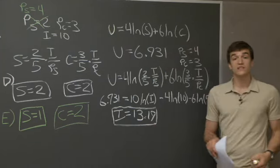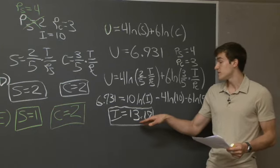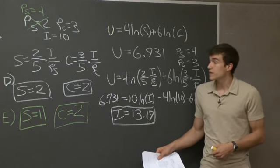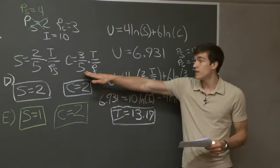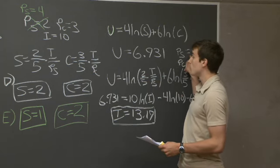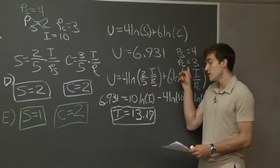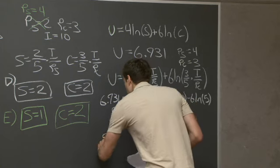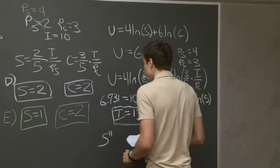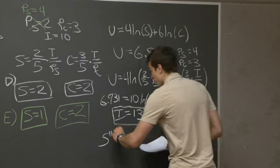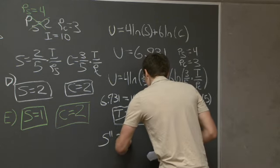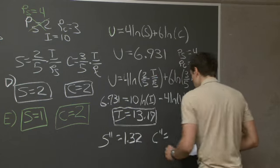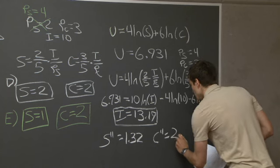Going back to our conditional demand curves and plugging in PS equals 4, PC equals 3, and income equals 13.19, we solve for S double prime — the new software demanded — which equals 1.32. And C double prime — the new amount of clothes demanded — which equals 2.64.